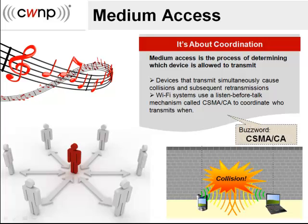The goal of Wi-Fi protocols is to establish rules about when to talk and when to listen. The first step in these protocols is to follow a listen-before-talk process called Carrier Sense Multiple Access with Collision Avoidance, abbreviated as CSMA-CA.